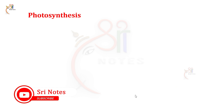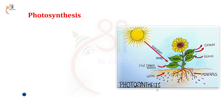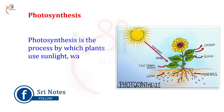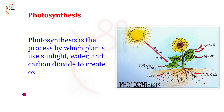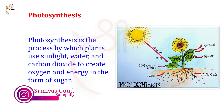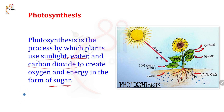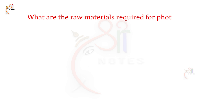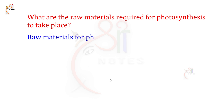We will now discuss what is photosynthesis. Photosynthesis is the process by which plants use sunlight, water, and carbon dioxide to create oxygen and energy in the form of sugar. Plants release oxygen and energy in the form of sugar — this is called photosynthesis. The raw materials required for photosynthesis are carbon dioxide, water, and sunlight.